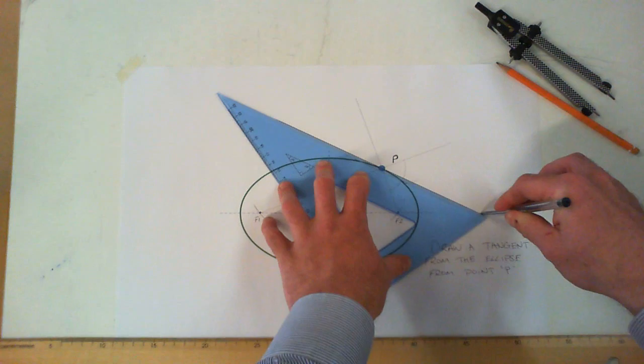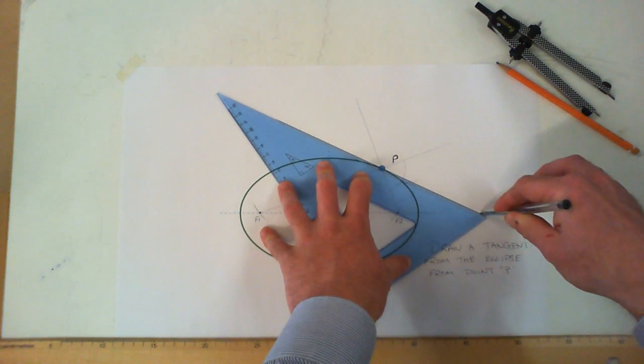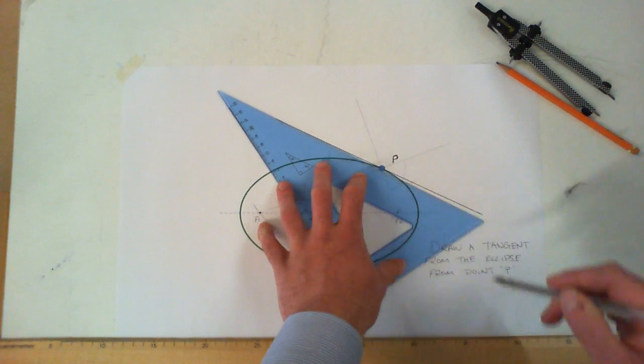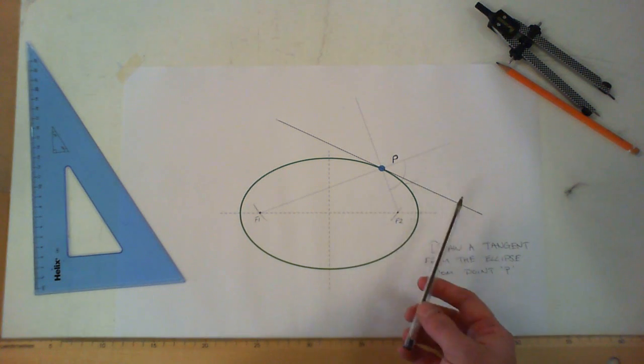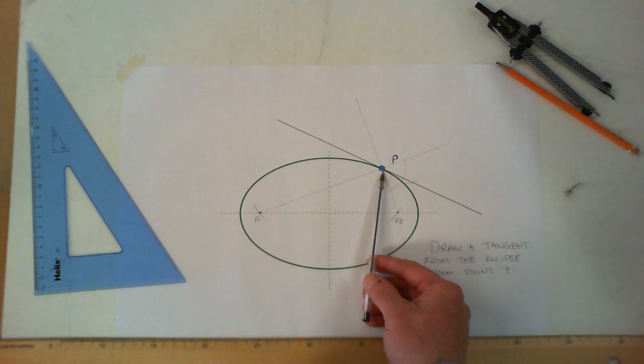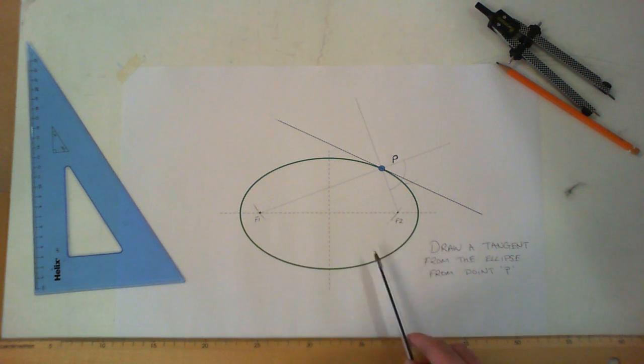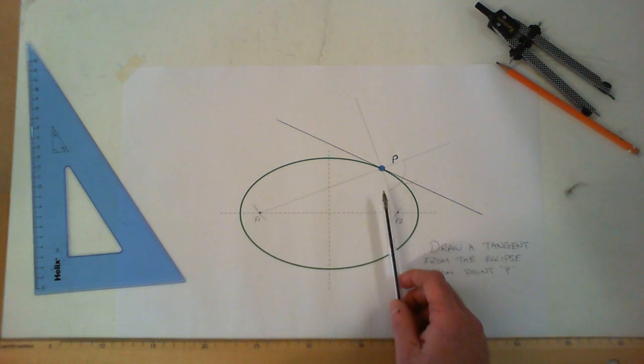I'll just put it in heavier so you can see. That's the same method regardless of where point P is. I just randomly selected point P to be located here; if it was on the other side or the bottom of the ellipse—anywhere—the method is exactly the same.